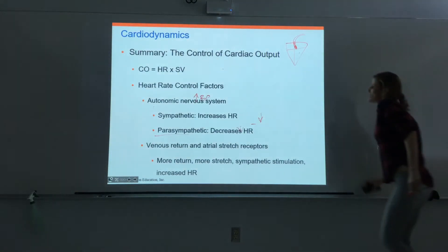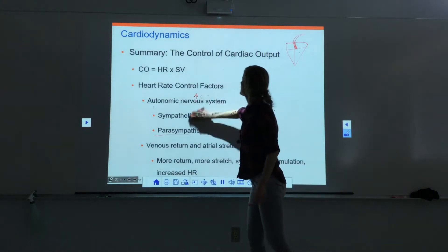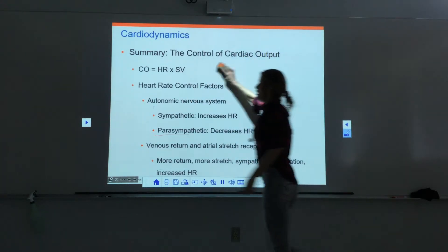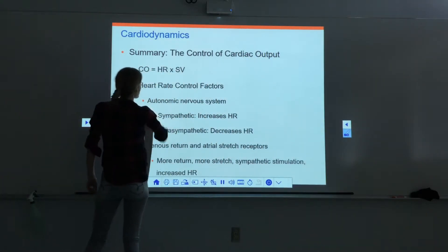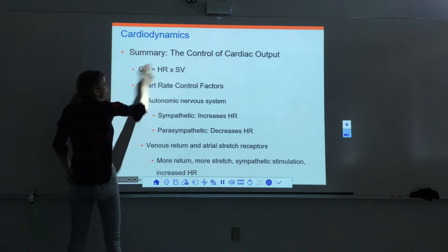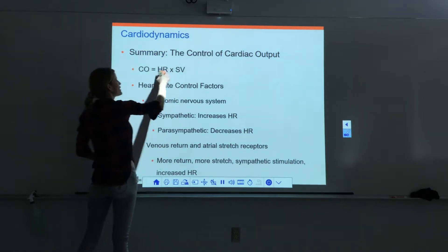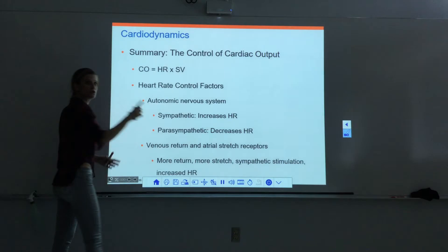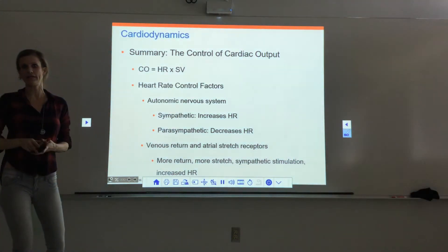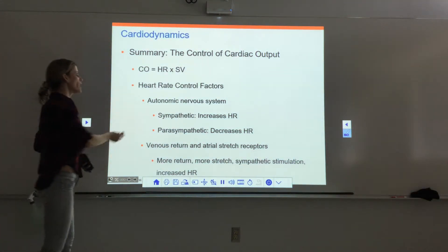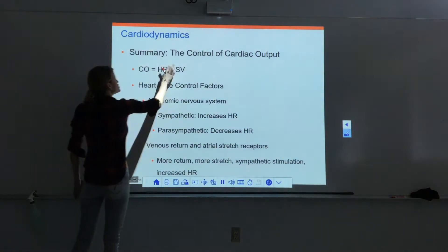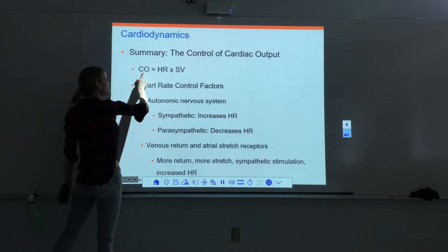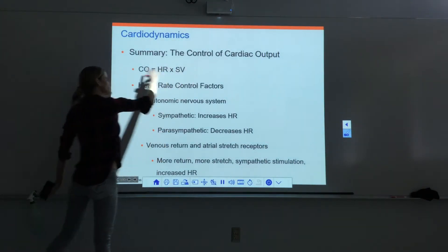These two slides summarize everything covered. Cardiac output is how much blood we pump — that's heart rate times stroke volume. If stroke volume isn't given, you can use EDV and ESV to calculate it. We can adjust heart rate or stroke volume to adjust how much blood we're pumping.